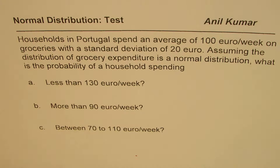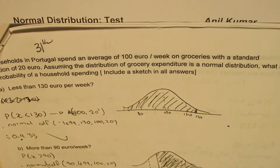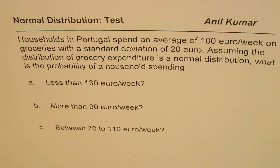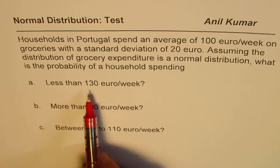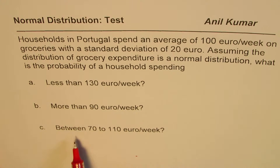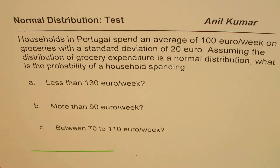I'm Anil Kumar. It is time to practice some questions from the test paper, so I picked up a question from an IB statistics test paper. The question here is: households in Portugal spend an average of 100 euro per week on groceries with a standard deviation of 20 euro. Assume the distribution of grocery expenditure is a normal distribution. Let's sketch the scenario and then answer these questions one by one.